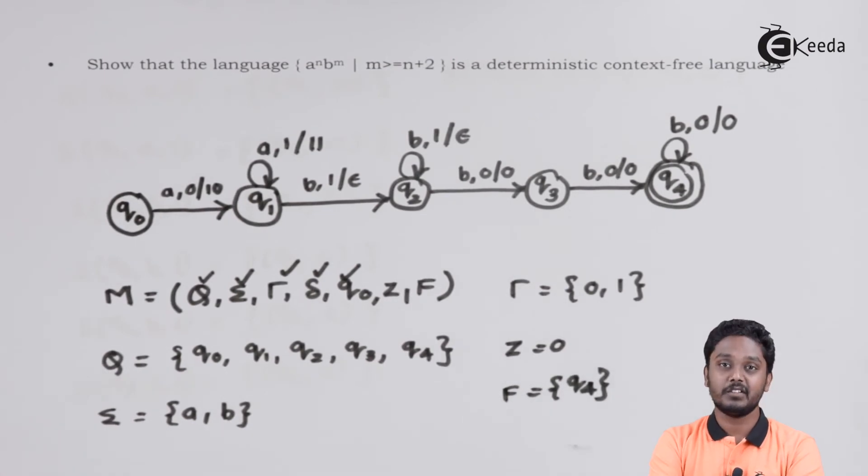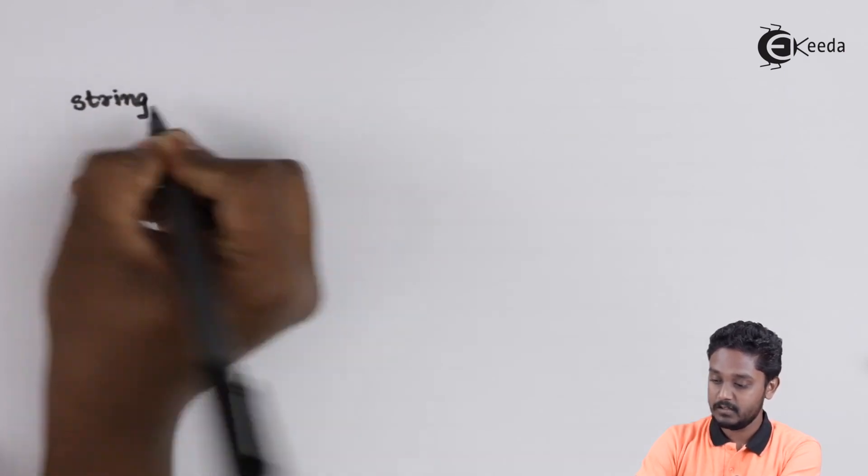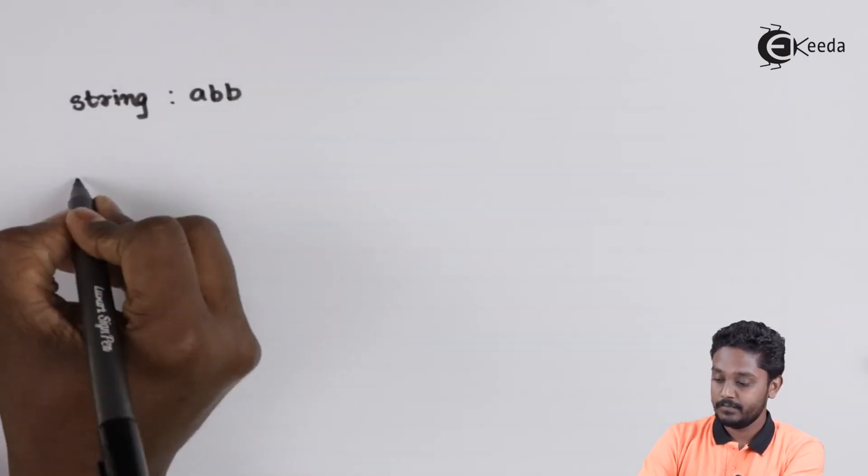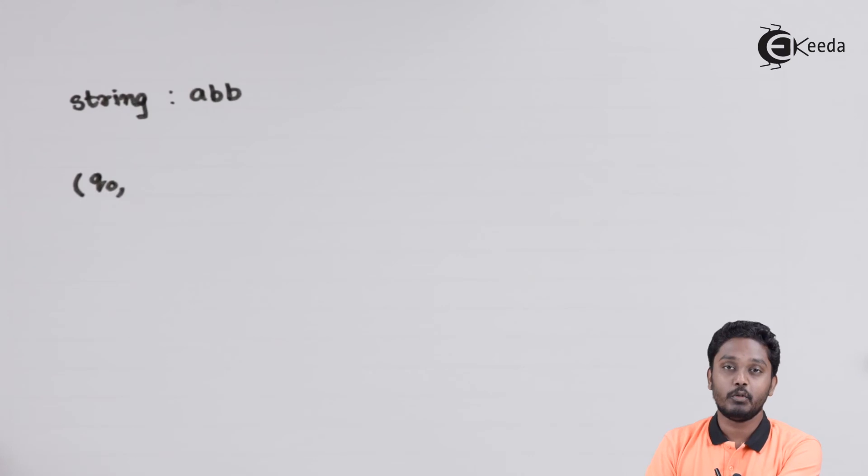Having constructed the machine and written all the components, now let us try to run one string on this particular machine. Let us say the string is ABB and we are using ID, that is instantaneous description notation. Q0 is the state, ABB is the string, with 0 as the top of the stack.